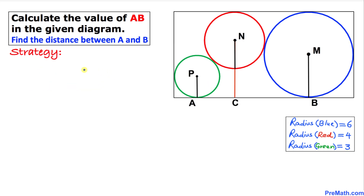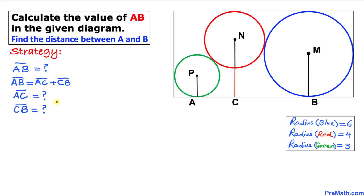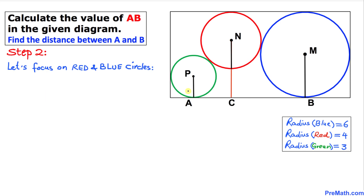Let's go over our action plan before we proceed. We want to calculate the value of AB. We can see from this figure that AB equals AC plus CB. So therefore we are going to calculate AC and CB first.